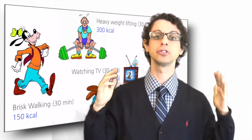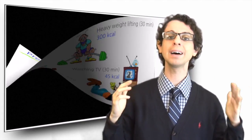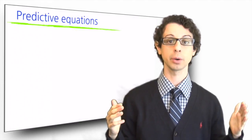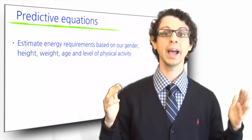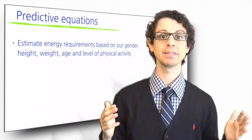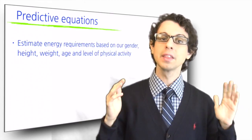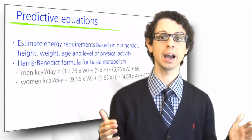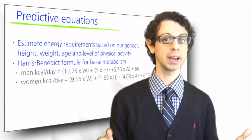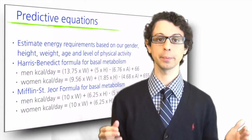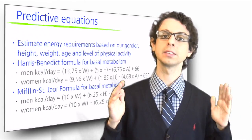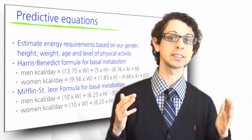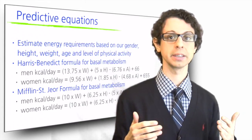We have also built some more general formulas that can be used to roughly estimate our energy requirements based on our gender, height, weight, age, and level of physical activity. The two most widely used formulas to estimate energy requirements in healthy individuals are the Harris-Benedict formula and the Mifflin-Sangiro formula. Let me just show you how these equations work with an example using the Harris-Benedict formulas.